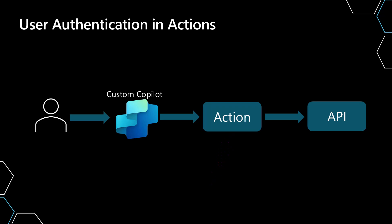Sometimes you want to impersonate the user. Other times you don't want the user to have to authenticate at all — instead you use a service principal name, an API key, or something of that nature to access the API.